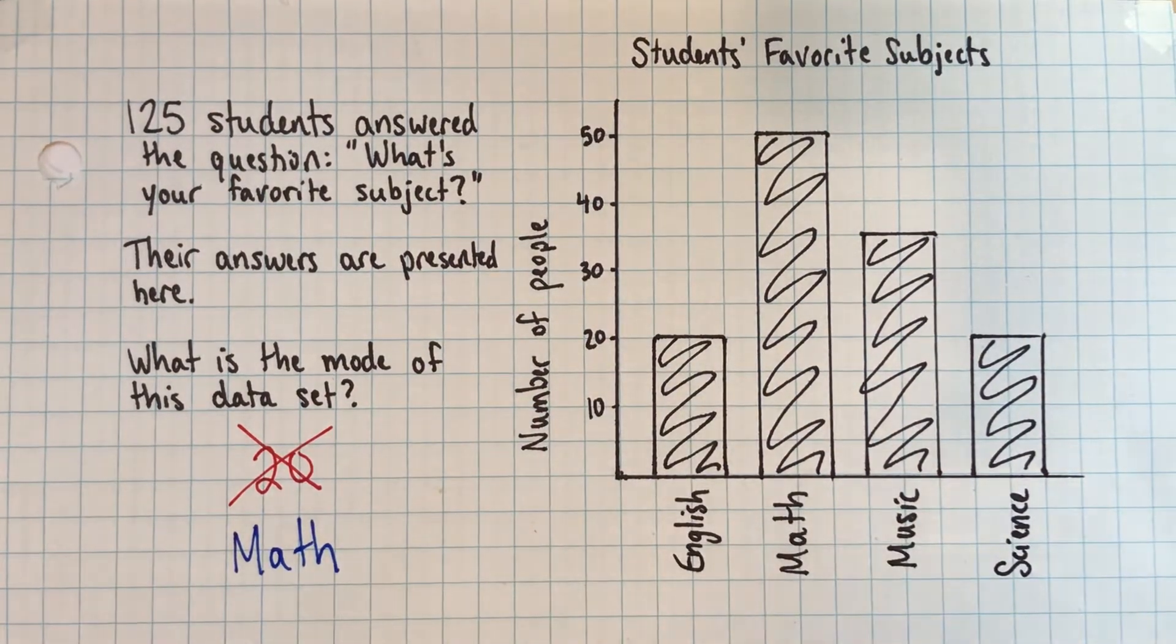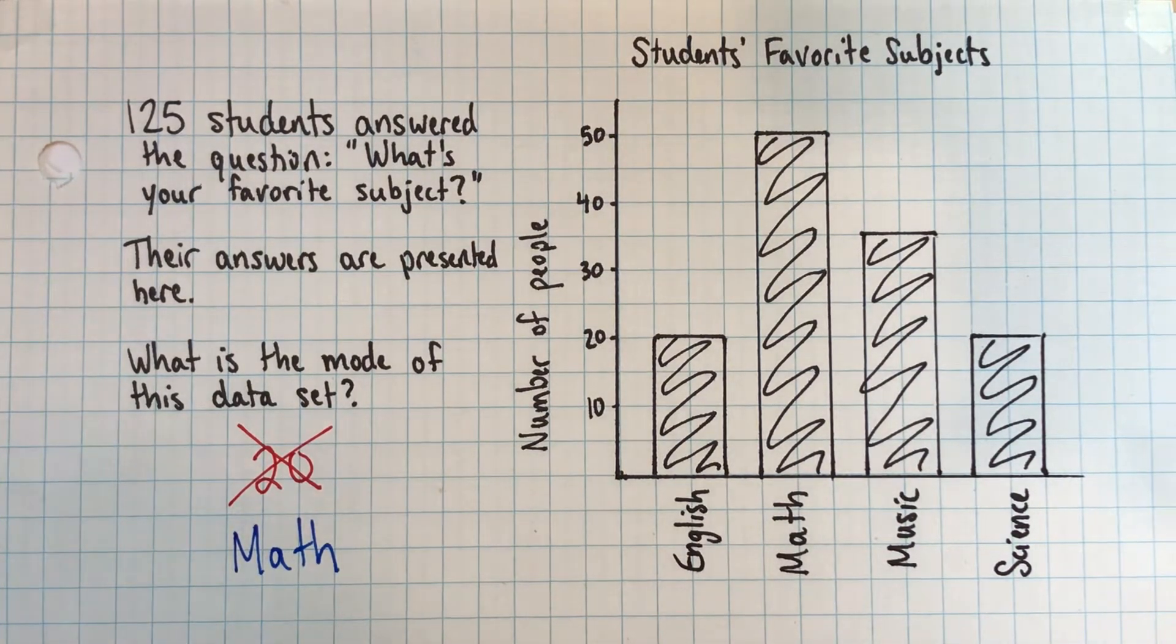Now it may come as a surprise that the mode can be like a word, a category instead of a number. That's not true of the mean and the median. You can't take the mean and the median of favorite subjects, but you can do it for the mode.